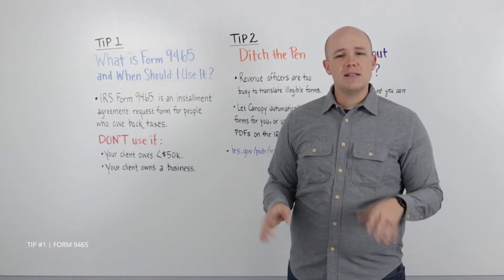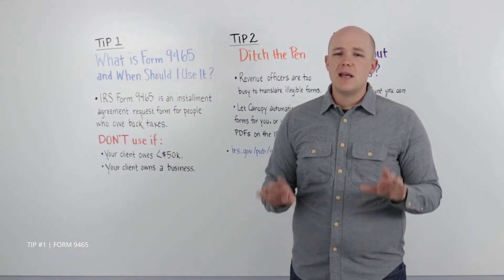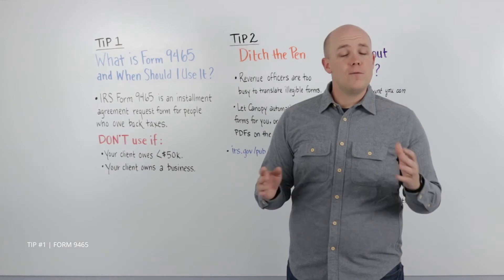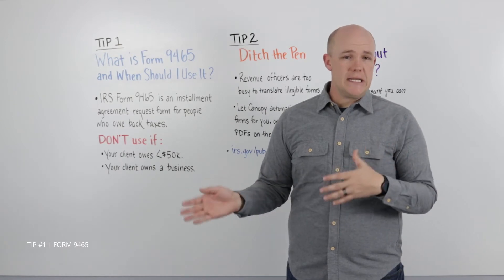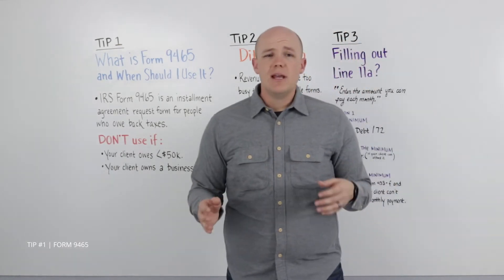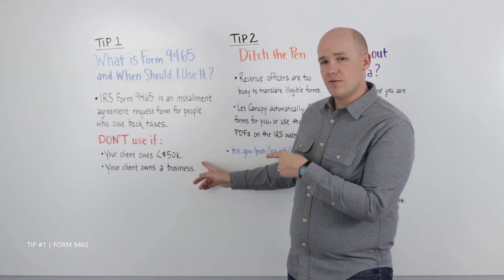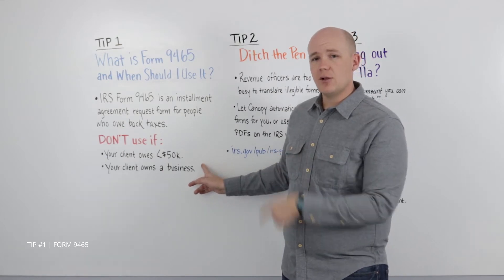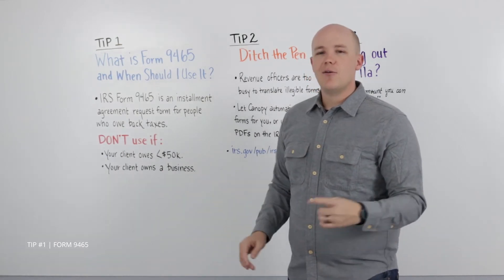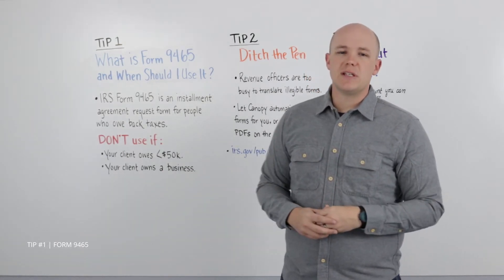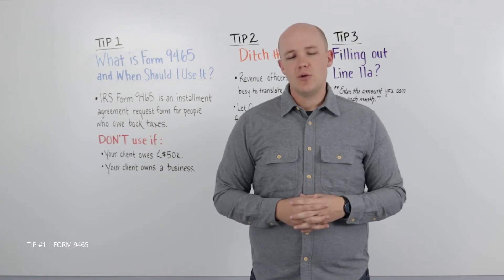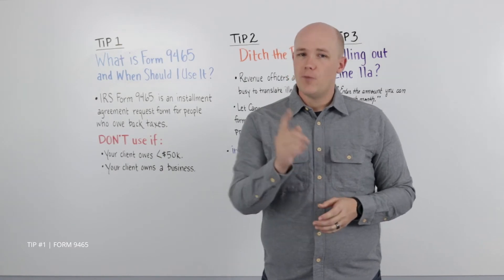Instead, get in contact with the IRS and they'll get you started filling out a Form 433-D. In other words, if your client has a tax debt of more than $50,000 and doesn't own a business, Form 9465 is the right Installment Agreement form for you.